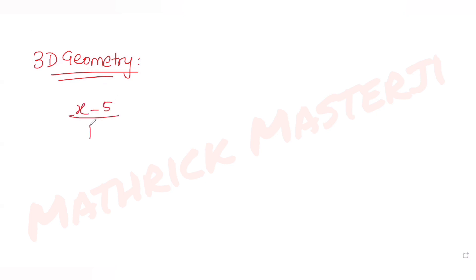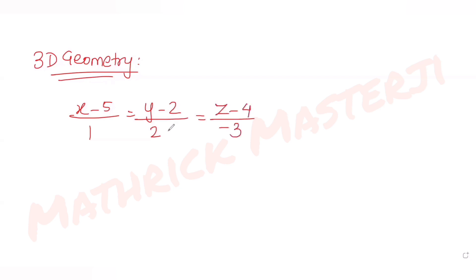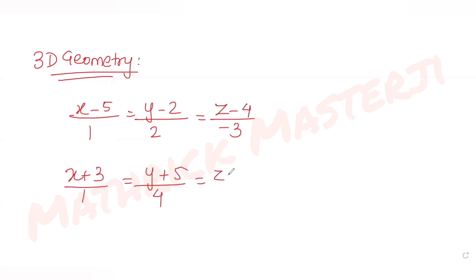One line is given to us as (x − 5)/1 = (y − 2)/2 = (z − 4)/(−3). The other line in the 3D plane is given as (x + 3)/1 = (y + 5)/4 = (z − 1)/(−1).